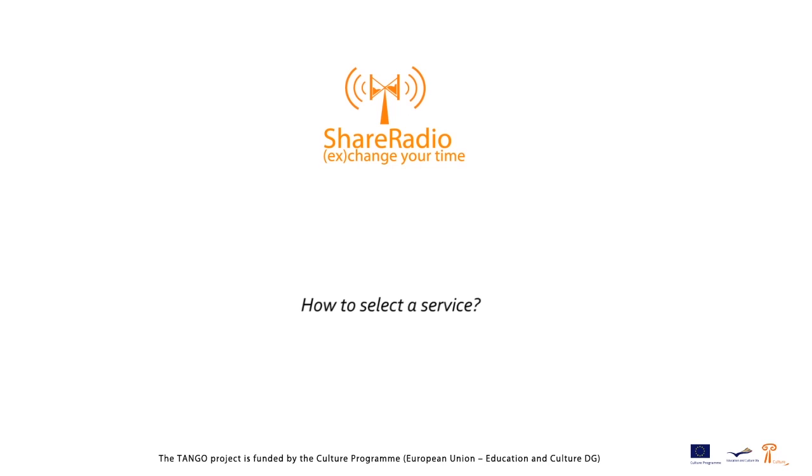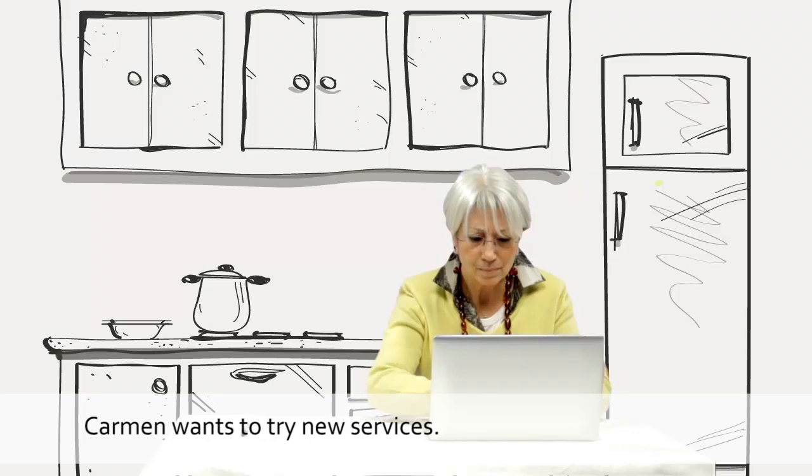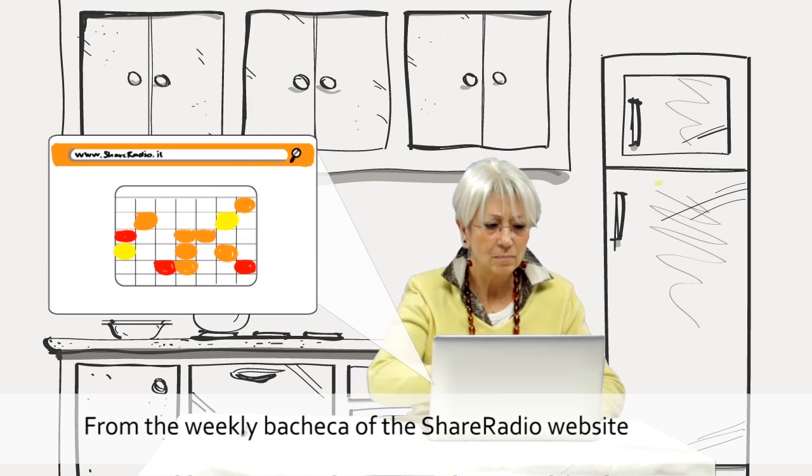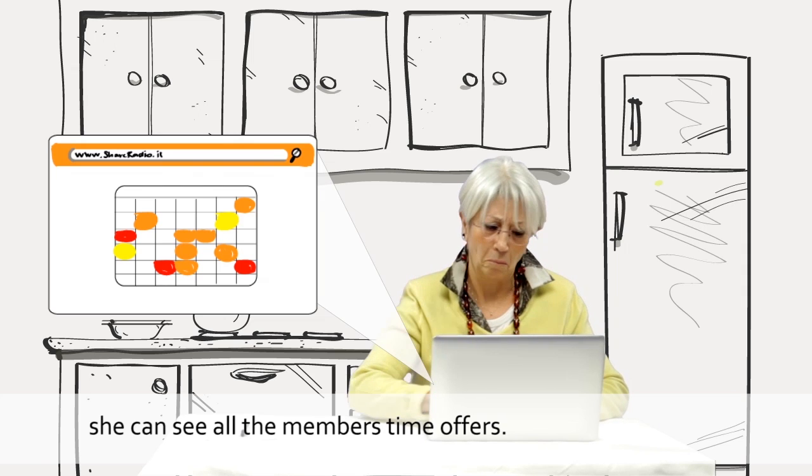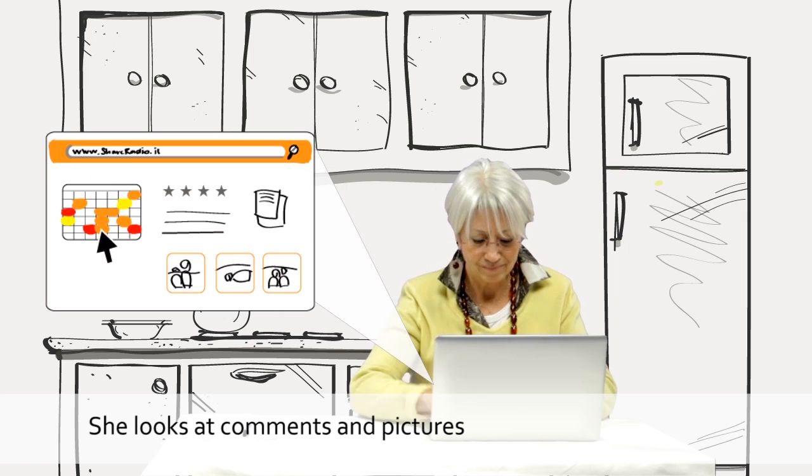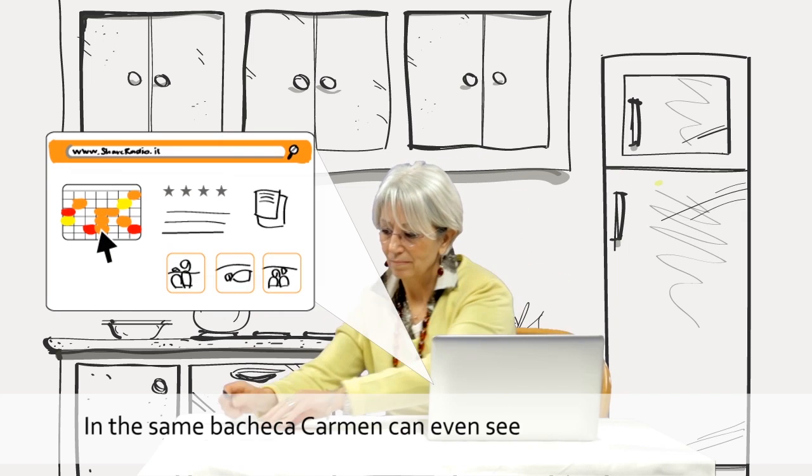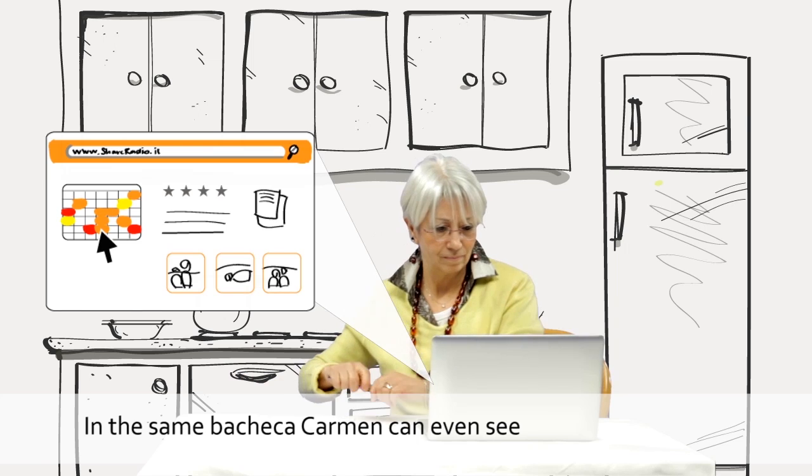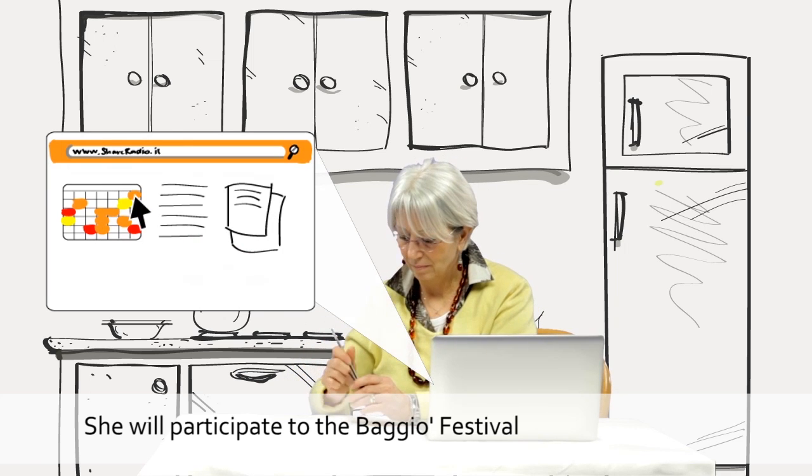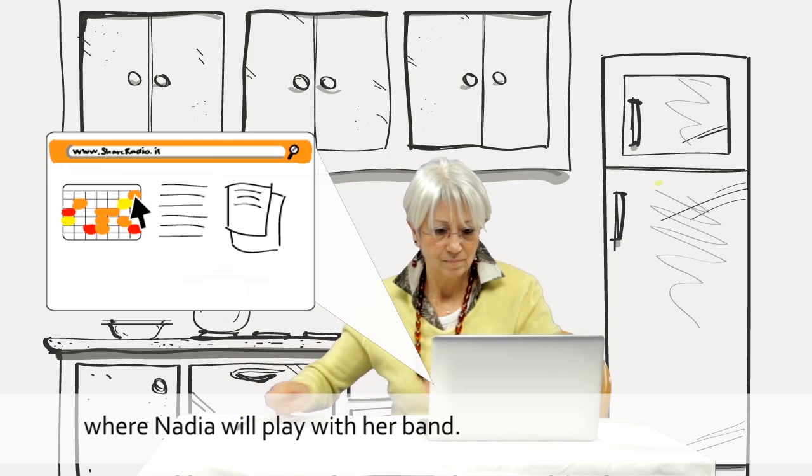How to select a service? Carmen wants to try new services. From the weekly bakkeka of the Share Radio website, she can see all the web members' time offers. English lessons, swimming lessons. She can look at comments and pictures and decides to book a yoga lesson in the park. In the same bakkeka, Carmen can even see the partner's association plans for next week. She will participate in the badges festival, where Nadia will play with her band.